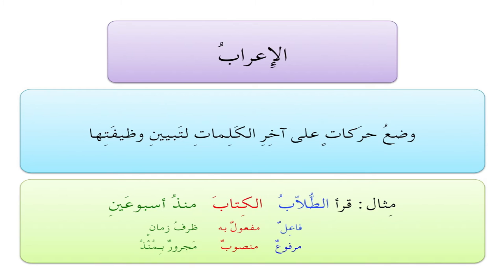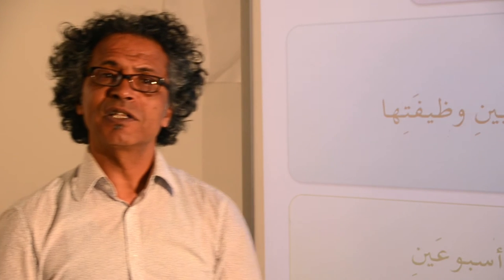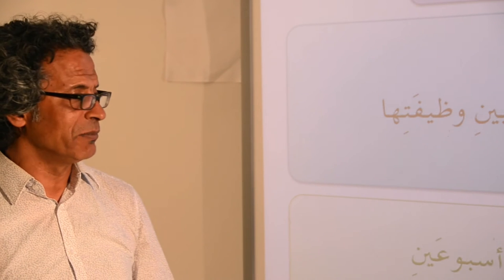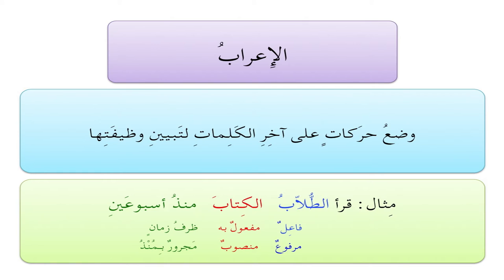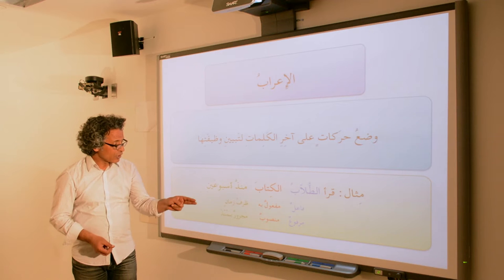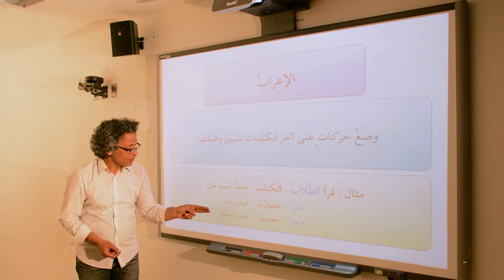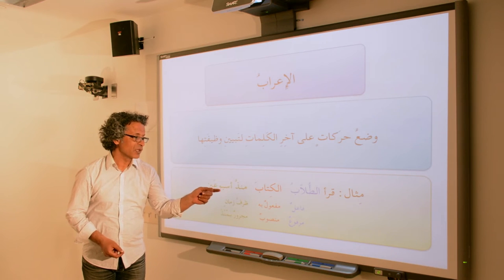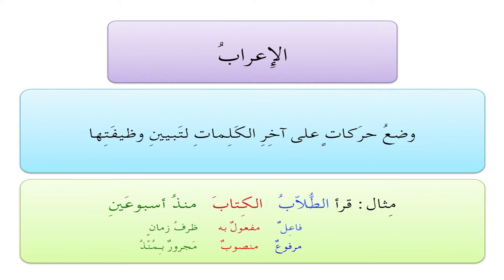الكتاب is ending with a فتحة — it is مفعول به منصوب, meaning it is the object of the verb and therefore it has to take a فتحة and be منصوب. Then منذ أسبوعين — the word أسبوعين, remember, is the way we mark the dual. So it is ظرف زمان مجرور بـ منذ, because it came after the word منذ which means 'since,' and therefore it has to be in المجرور.